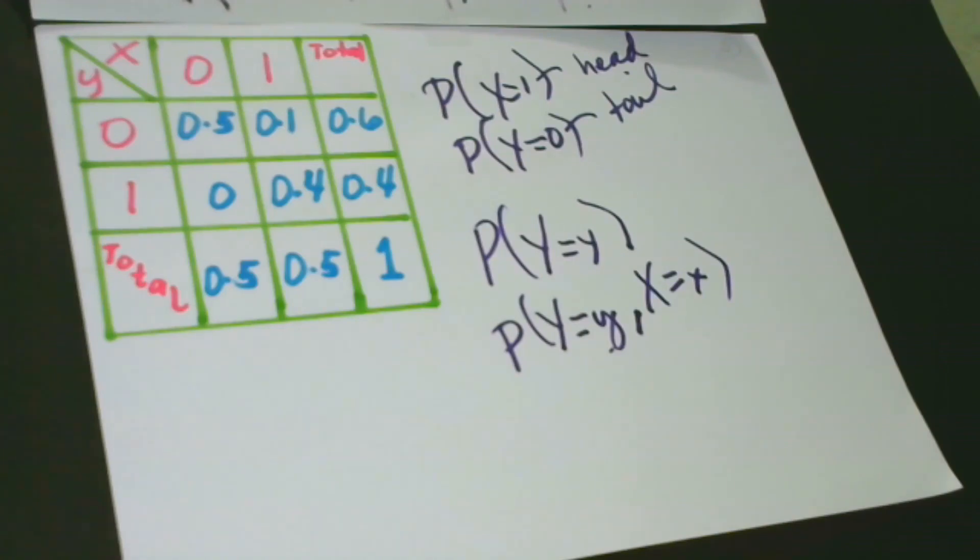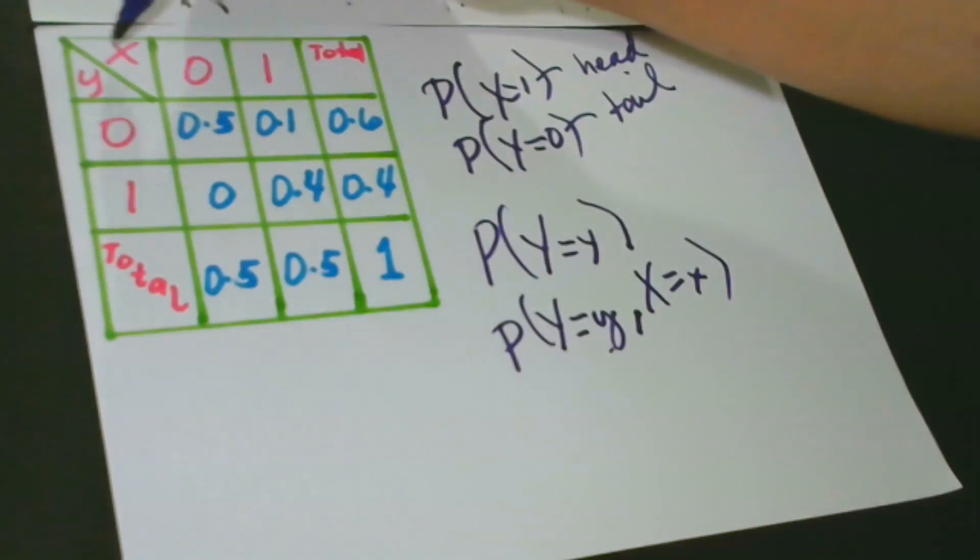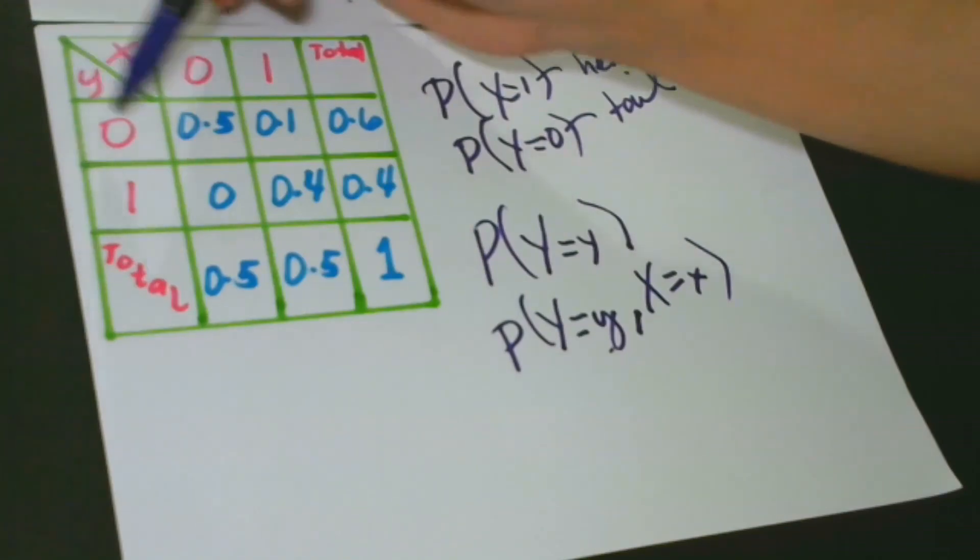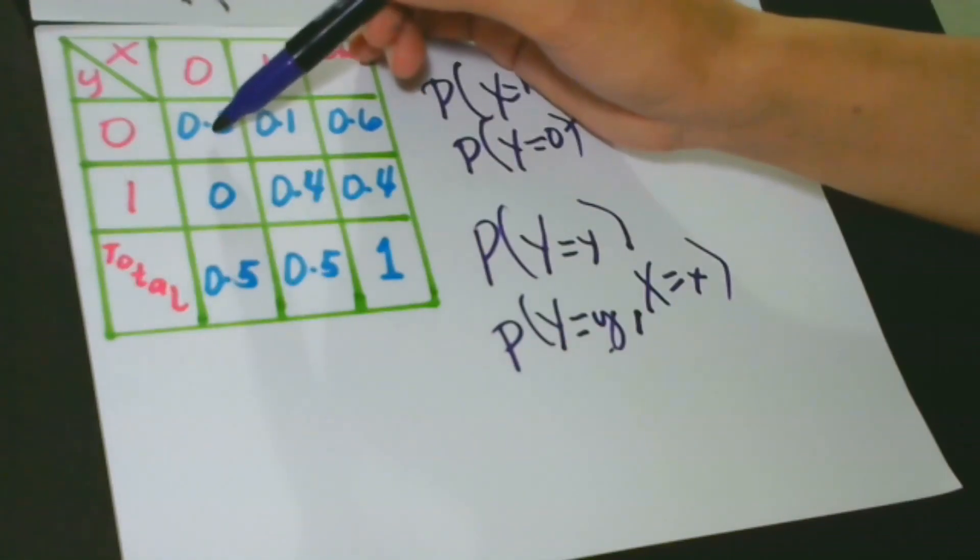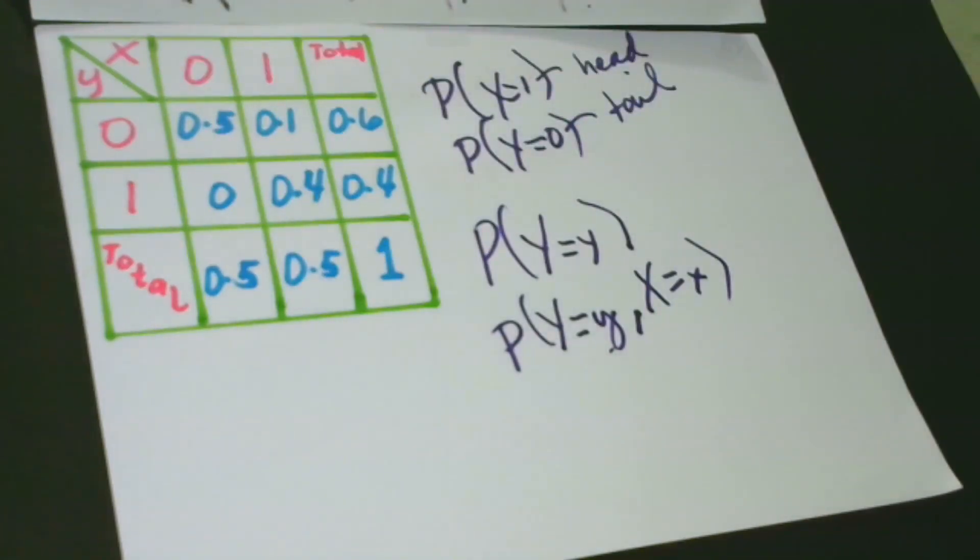That means considering that X happened, Y is resulted too. Y has a value because X has happened. We can do this using this formula.